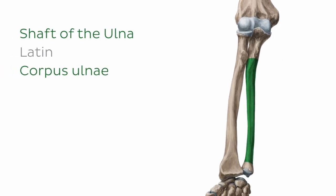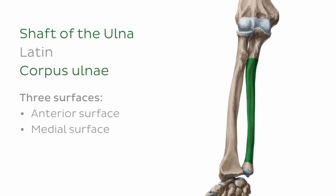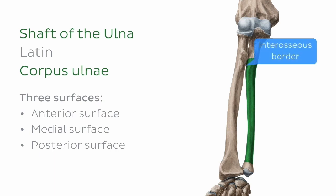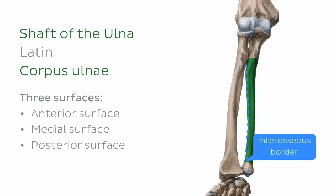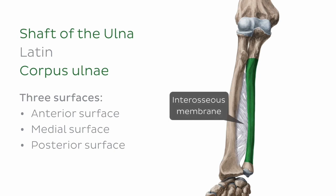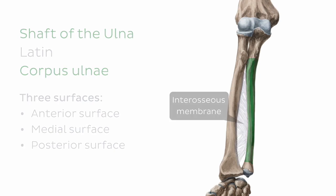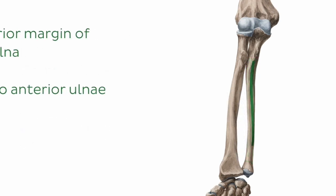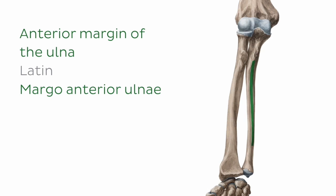Moving distally, let's take a few moments to examine the shaft, or body of the ulna. The ulnar shaft has three surfaces: the anterior surface, the medial surface, and the posterior surface. From an anterior perspective, the anterior surface is limited laterally by the interosseous border, or crest, which provides attachment for the interosseous membrane. Medially, the anterior surface of the ulna is bounded by the anterior margin of the ulna, which separates it from the medial surface.